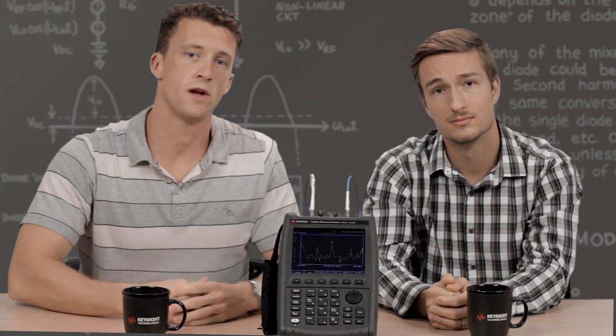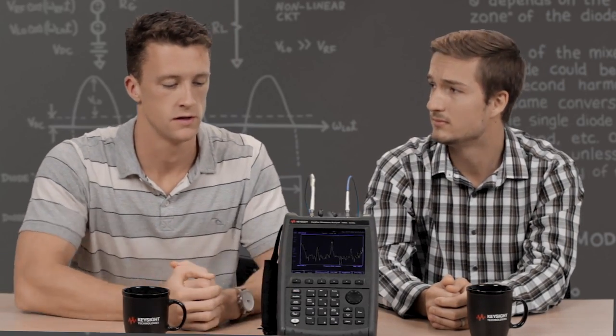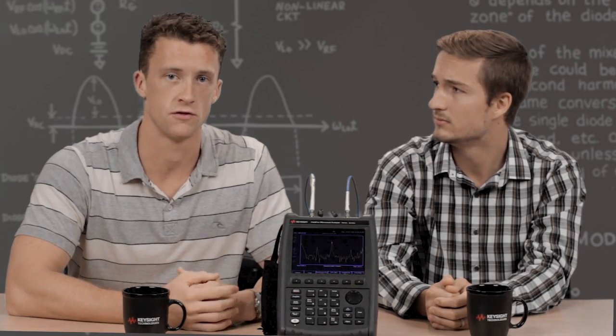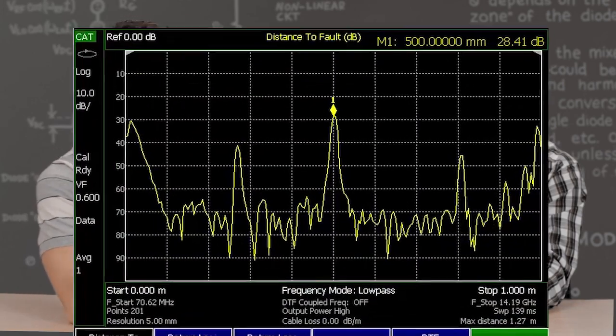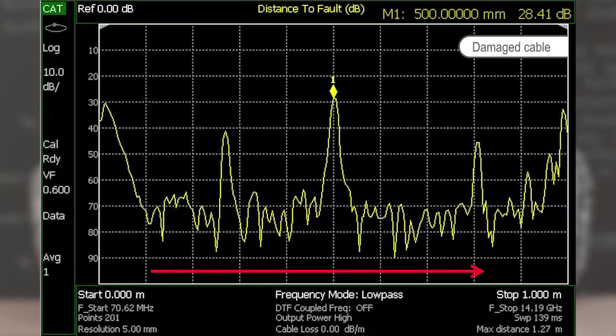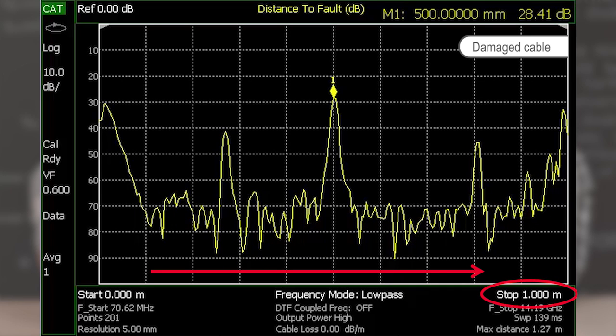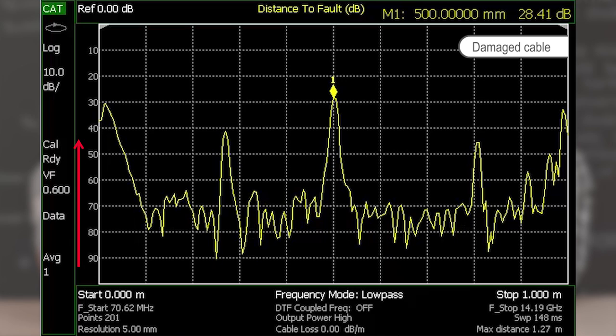So we've actually entered in the parameters of our cable into the FieldFox so it knows how to make that distance to fault measurement. Along the x-axis we have distance measured in meters, and we've entered in one meter because that encompasses the length of our cable. Along the y-axis we have power in dB.